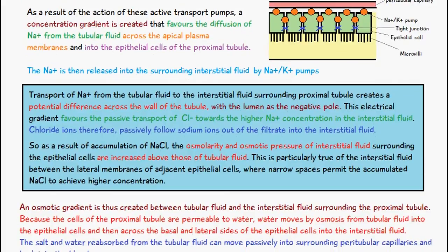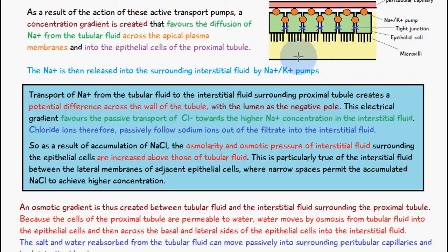The transport of sodium ions from the tubular fluid to the interstitial space creates an electrochemical gradient. Because sodium ions are positively charged, their accumulation in the interstitial space creates a potential difference across the tubule wall — the outside becomes positive and the lumen becomes negative. This electrical gradient favors the passive transport of chloride ions, which are negatively charged, out of the tubular fluid and into the interstitial fluid following the sodium ions.